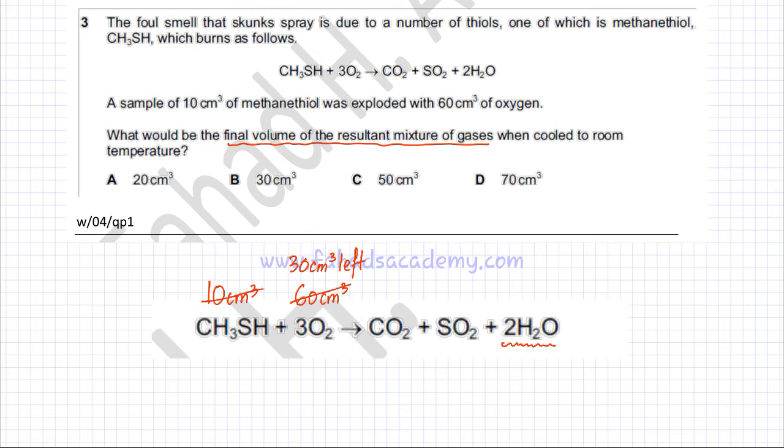According to the ratio, 1 produces 1. So if you have 10 cm³ reacting, it's going to produce 10 cm³ of CO₂ and 10 cm³ of SO₂. So 10 cm³ of CO₂ would be produced, 10 cm³ of SO₂ would also be produced, and there would be 30 cm³ of oxygen left behind.